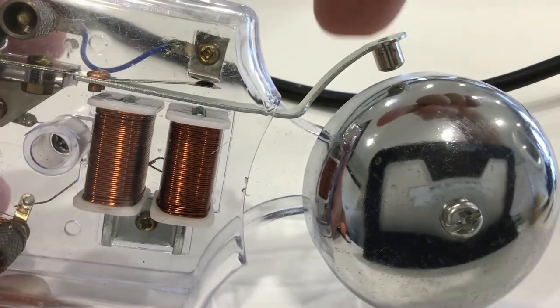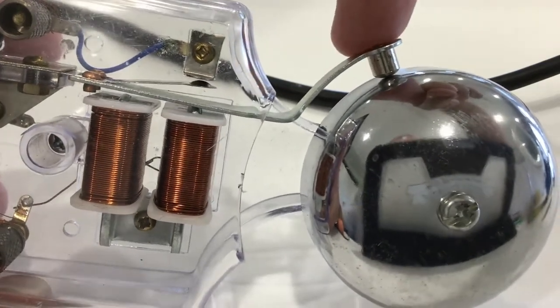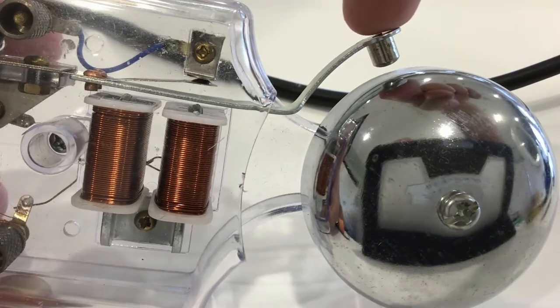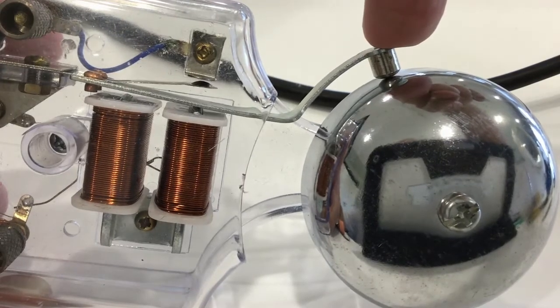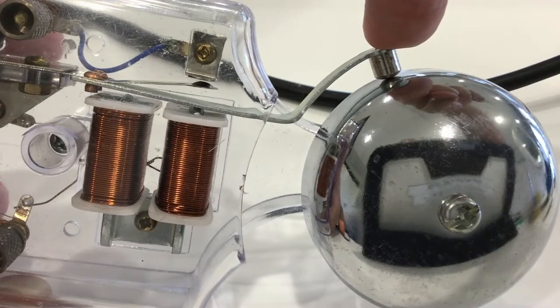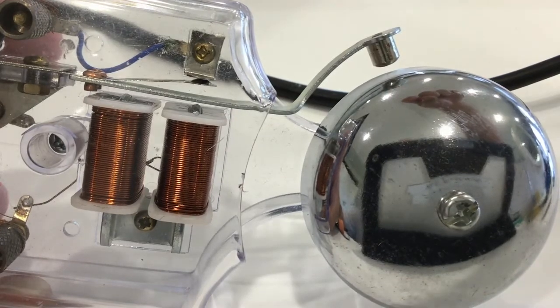And so the cycle just goes round and round and round. So, electromagnets are on, the arm gets attracted, the contacts are broken, electromagnets off, and then the arm returns back to its original position.